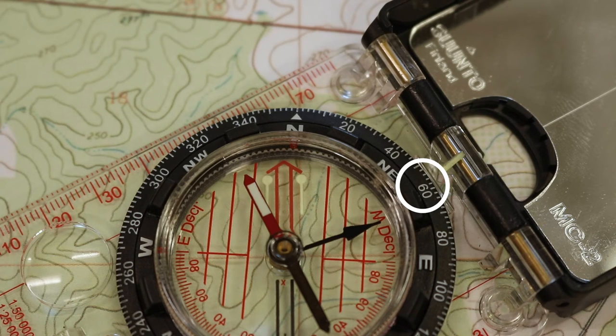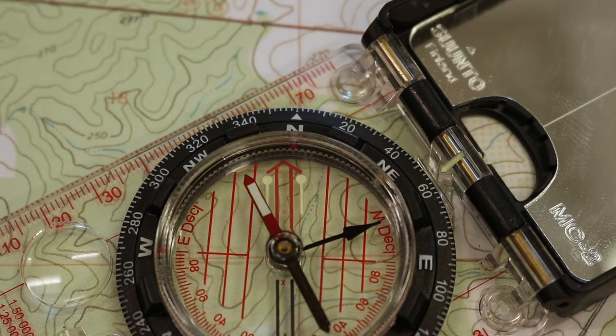If you were to try and navigate to that spot in the field, you would align the floating magnetic needle with your orienteering arrow on the face of the compass, and using your compass as a guide, begin pacing in that direction.